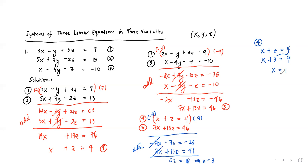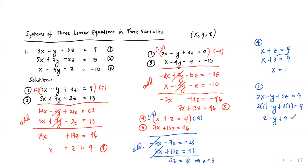Since we have values for x and z, we substitute both into equation 1: 2x minus y plus 3z equals 9. Substituting x equals 1 and z equals 3 gives 2 minus y plus 9 equals 9, so negative y plus 11 equals 9. Transposing gives negative y equals negative 2, and dividing by negative 1 gives y equals 2. Our solution set is the ordered triple x equals 1, y equals 2, z equals 3.